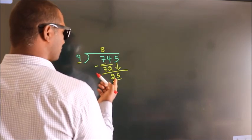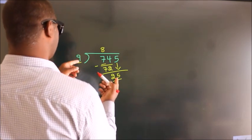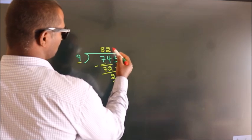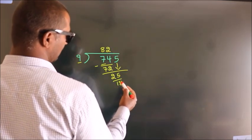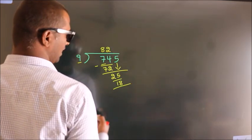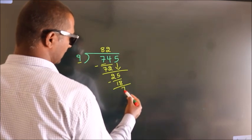A number close to 25 in the 9 table is 9 times 2, 18. Now we subtract. We get 7.